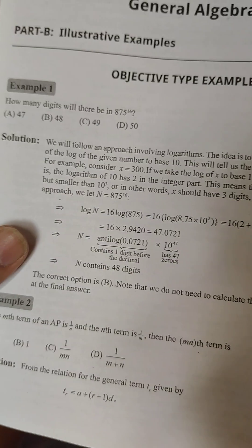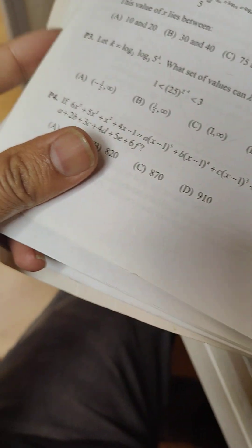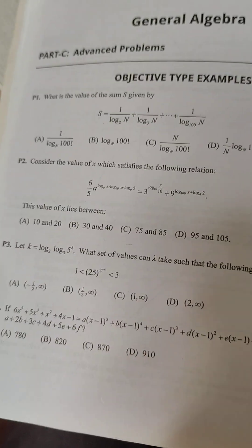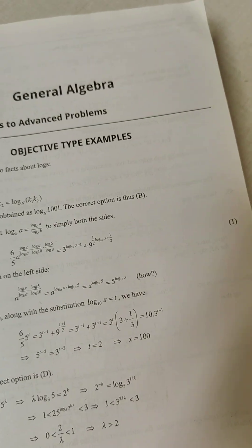Apart from it, you will see that Part B consists of objective type examples, and they are fully solved in detail. Part C consists of some advanced level problems that are unsolved, and in Part D they have given the solutions to those unsolved problems.